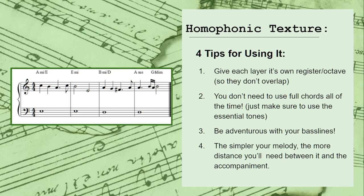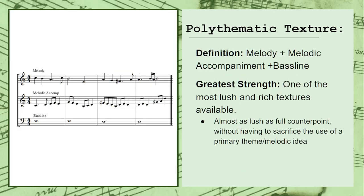Despite the overwhelming utility of the homophonic texture, it's not the only accompanimental texture that you need to know. The other one is something called the polythematic texture. While not as common as the homophonic texture, the polythematic texture works incredibly well when you want a more lush and complex accompanimental style. It consists of any combination of melody plus melodic accompaniment plus bass line, and is possibly the most incredibly lush and rich texture that you can use without having to sacrifice keeping a primary theme or melody in your foreground.